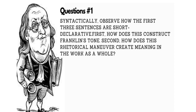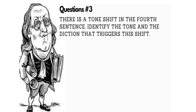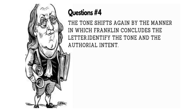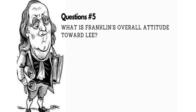Number three: there is a tone shift in the fourth sentence — identify the tone and the diction that triggers this shift. Number four: the tone shifts again by the manner in which Franklin concludes the letter — identify the tone and the authorial intent. Number five: what is Franklin's overall attitude toward Lee? All the questions and slides are in the description below, as are the texts.